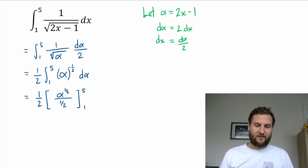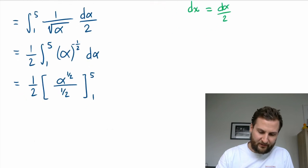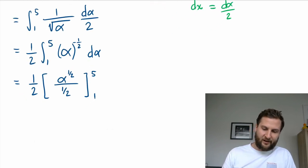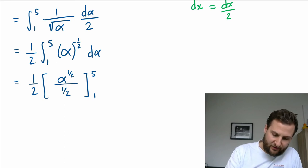So moving along, I get alpha to the 1 half divided by 1 half, evaluate at 5 and then subtract evaluation at 1.